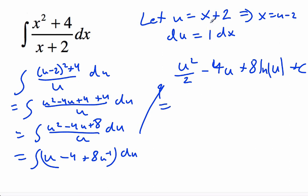And substituting u back in, we get x plus 2 all squared over 2 minus 4 times x plus 2, plus 8 ln absolute value of x plus 2 plus c is our integral. All right, and we'll see you next time.